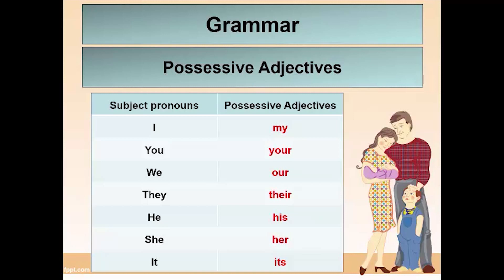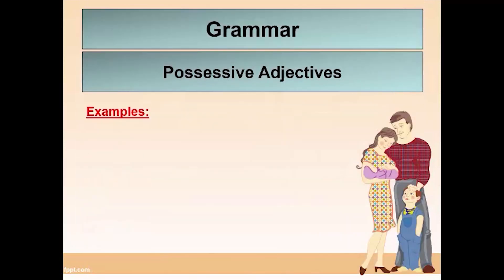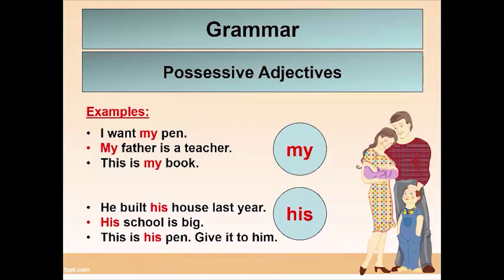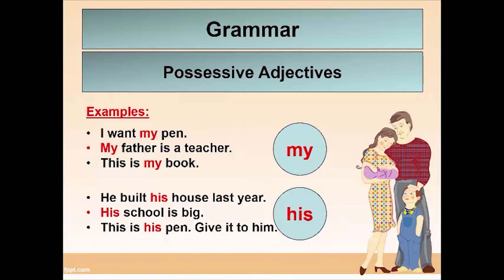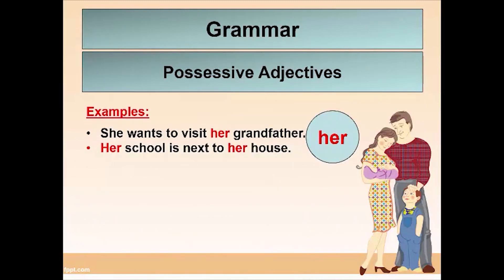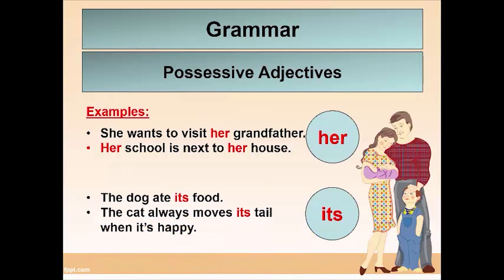Let's have some examples. 'My': I want my pen. My father is a teacher. This is my book. 'His': He built his house last year. His school is big. This is his pen. Give it to him. 'Her': She wants to visit her grandfather. Her school is next to her house. 'Its': The dog ate its food. The cat always moves its tail when it's happy.